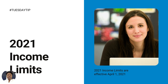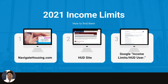As you know, HUD recently posted the 2021 limits, and they were effective as of April 1st, 2021. You can find a link to these limits on our website at NavigateHousing.com. You can also go to the HUD website directly or just Google income limits HUD user.